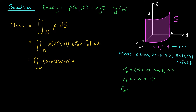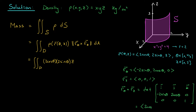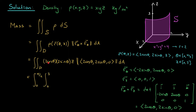We have to find their cross product. The cross product of R theta and R z is the determinant of the matrix with I, j, k in the top row; minus 2 sine theta, 2 cos theta, 0 in the second row; and 0, 0, 1 at the bottom. The resulting vector is 2 cos theta, 2 sine theta, 0. Back to our integral: we multiply by the norm of this cross product, which is 2 cos theta, 2 sine theta, 0. We have the bounds on theta and z, so we write this as the integral from 0 to pi over 2 of the integral from 0 to 3 of 4 cos theta sine theta z, and the norm here is simply 2. We have dz d theta, and now we evaluate.